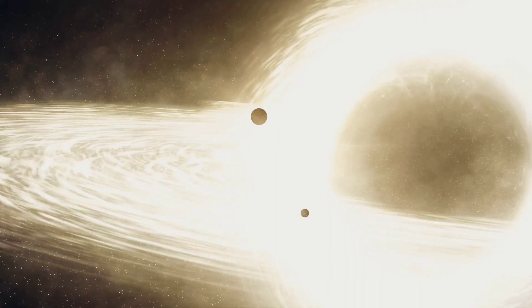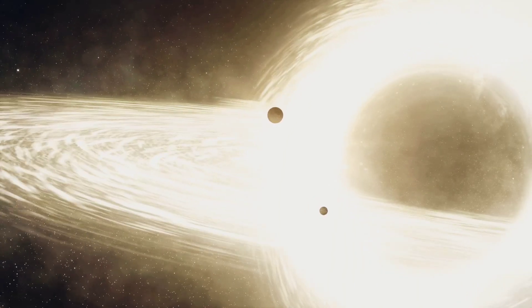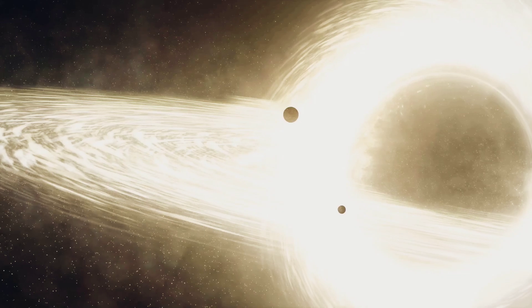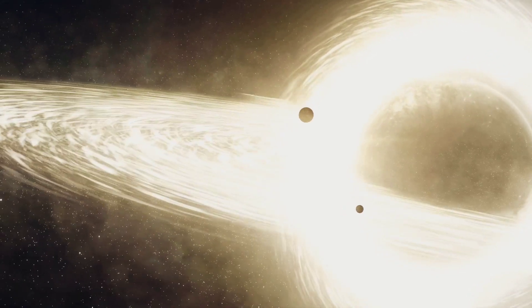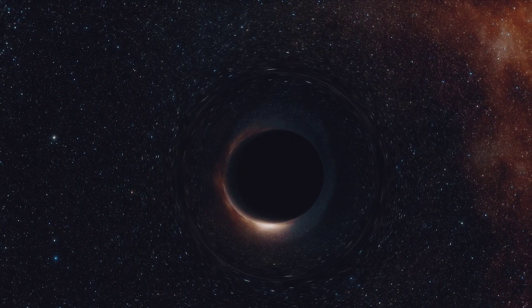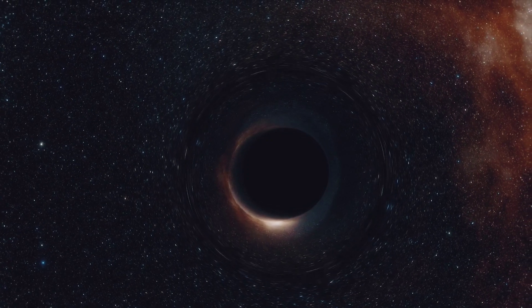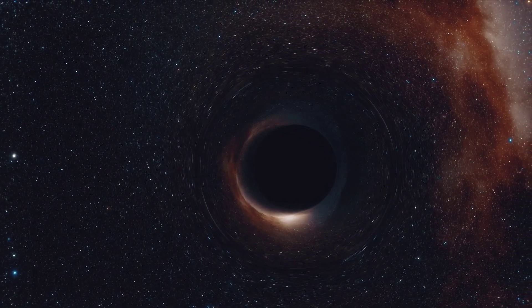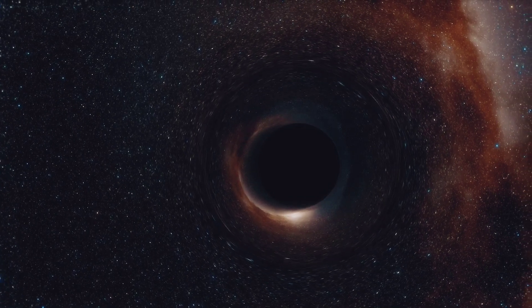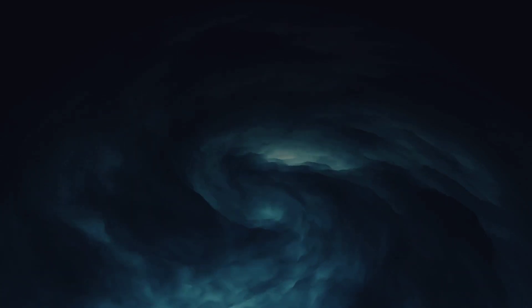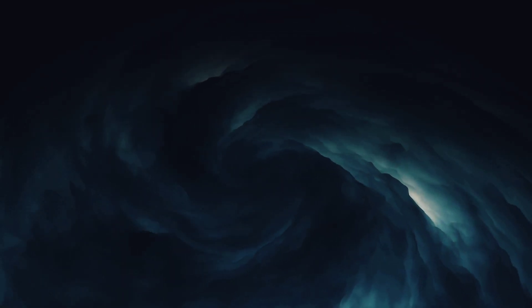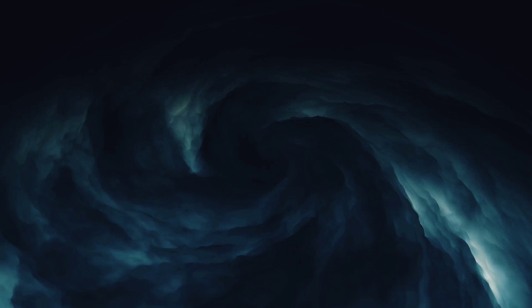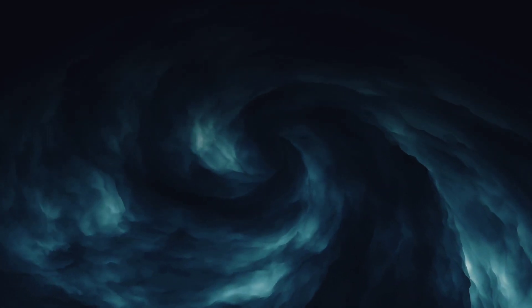Just like the water spiraling down the drain, anything that falls into a black hole spirals inwards, faster and faster, until it crosses the event horizon, the point of no return. Once something crosses this boundary, it can't come back out. Not even light, the fastest thing in the universe, can escape the black hole's gravitational pull. So next time you're watching water spiral down the drain, think about the cosmic phenomenon it mirrors. It's a small reminder of the incredible forces at work in our universe, hidden in one of the most ordinary of places.